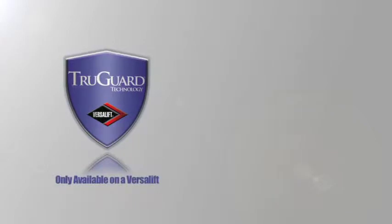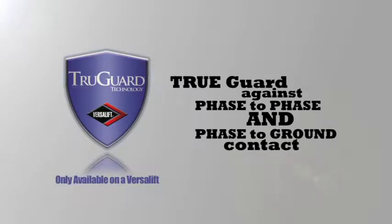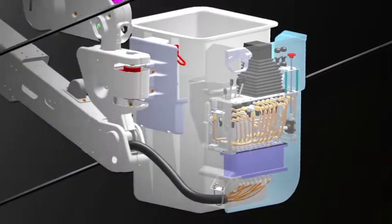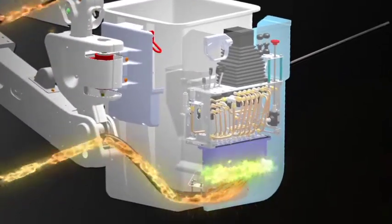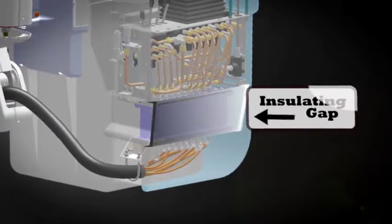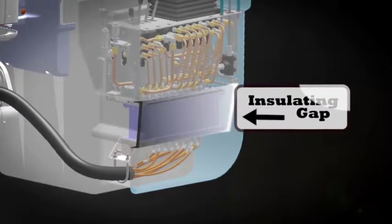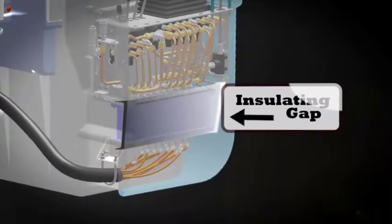TruGuard technology was developed by Time Manufacturing to give the operator a TruGuard against phase-to-phase and phase-to-ground contact. It effectively blocks the electrical path from the boom tip and jib to the entire upper control panel. It's a simple and effective design that gives us a true insulating gap between the control panel and the boom tip area.